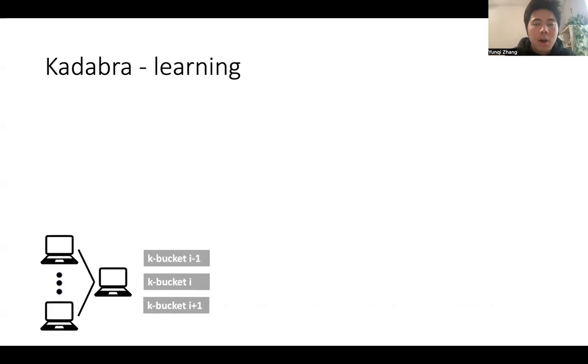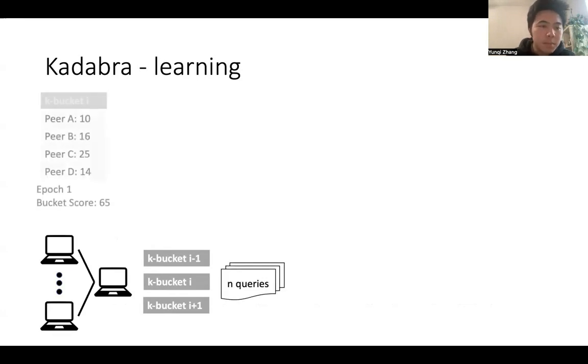Here we discuss how our Cadabra node learns. Suppose we have some bucket i, and we have n queries in an epoch. For the first epoch, suppose we have four peers, and each of them has a score. The bucket score is the sum of the peer scores.